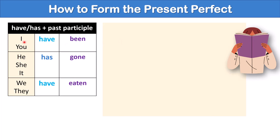For example, I have been. He has gone. We have eaten. You can also contract this and say I've been. He's gone. We've eaten.